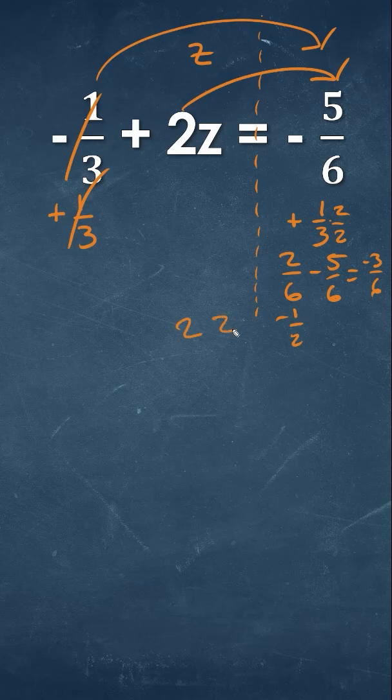so we're going to have 2z on this side. What we need to do is, since this is multiplication, 2 times z, we want to do the opposite, which is division. If we divide on that side, we're going to divide on this side.